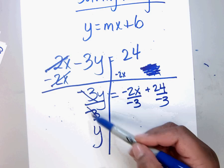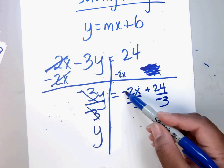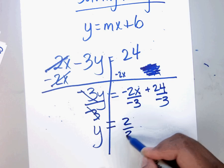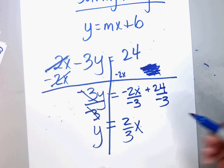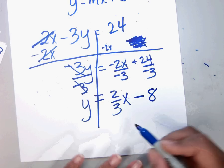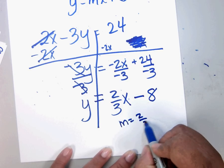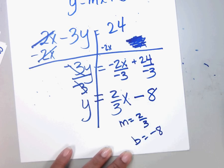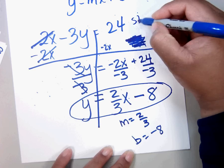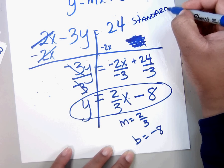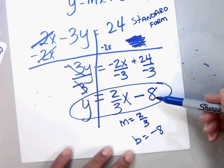The 3's cancel. A negative divided by a negative is a positive, and this positive divided by this negative is a negative. Now we officially have m and we officially have b. This is called solving for y — I have my equation changed from standard form to slope-intercept form.